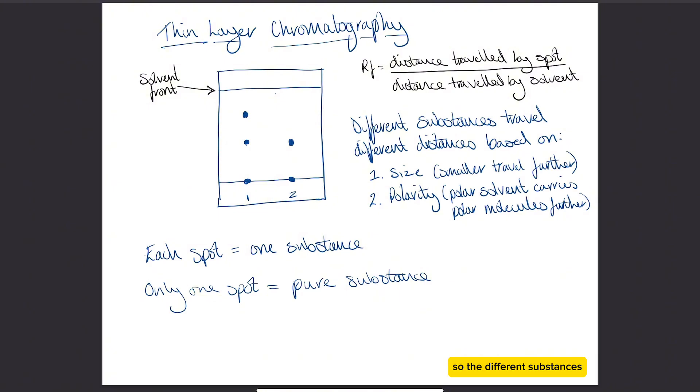The different substances will travel at different speeds, and the different speeds or distances they travel are dependent on two things. The first thing is the size: smaller particles tend to travel further because they're lighter, so they're easier for the solvent to carry. Secondly, they're separated based on polarity.